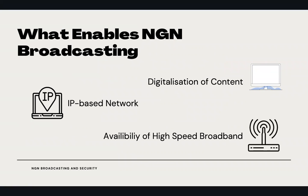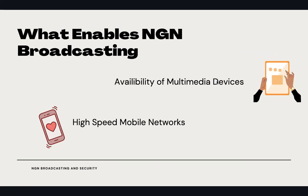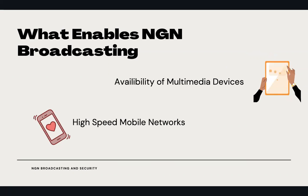The third aspect is availability of high-speed broadband. The technology of telecommunication has advanced so much that high-speed broadband can and must be achieved to enable NGN broadcasting. Another aspect includes availability of multimedia devices. With high-speed broadband, we need devices capable of using it. Smartphones nowadays can support high-speed broadband as well as high-speed mobile networks.